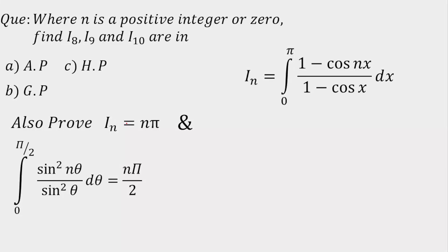Today we are going to discuss a question on integration. I(n) is given as integration from 0 to π of (1 - cos(nx)) / (1 - cos(x)), where n is a positive integer or 0. We have to determine whether I(8), I(9), and I(10) are in AP, GP, or HP. This is a three-part question. The second part requires us to prove that I(n) = nπ, and the third part requires us to prove a related integral using I(n). Let's start with the first part.